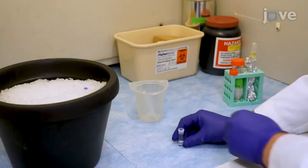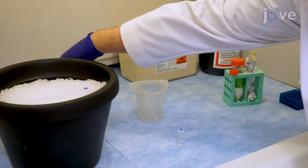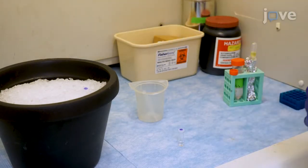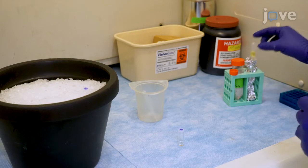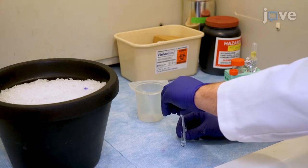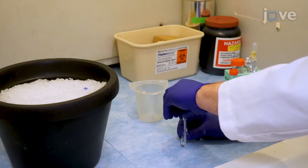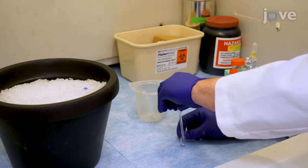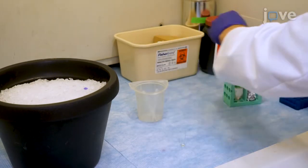After fixing samples in 0.1 molar sodium cacodylate buffer containing 2.5% glutaraldehyde and 2 millimolar calcium chloride, samples should be cut into blocks no larger than 2 millimeters cubed and washed with 0.1 molar sodium cacodylate buffer containing 2 millimolar calcium chloride.